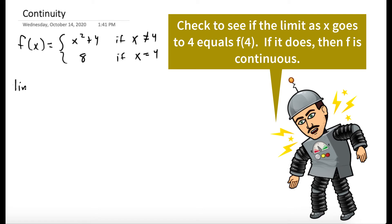We want to check if the function is continuous at 4, so the first thing we should do is evaluate the limit as x goes to 4 of f of x. And for values of x that are close to 4, our function is the same thing as x squared plus 4.